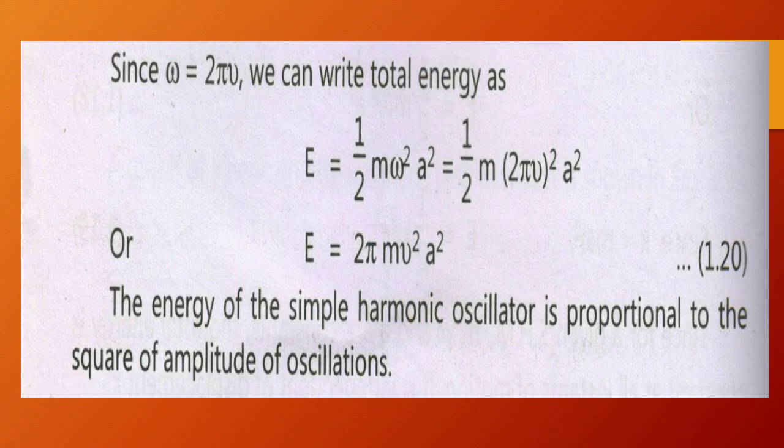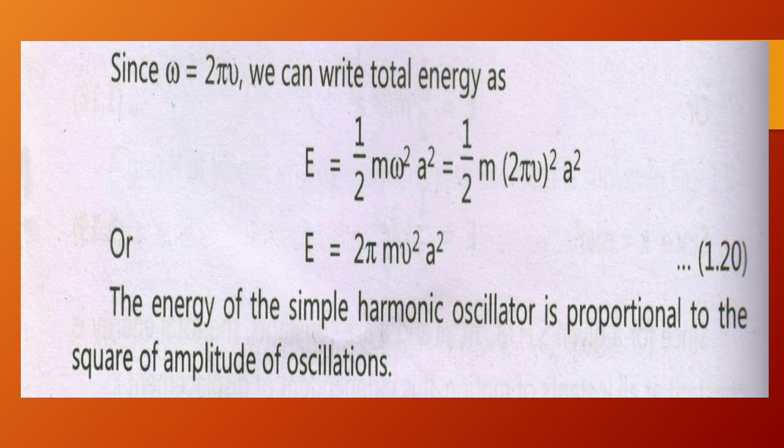Since ω = 2πν, we can write E = ½Mω²a² = ½M(2πν)²A², therefore E = 2π²Mν²A². The energy of a simple harmonic oscillator is proportional to the square of the amplitude of the oscillation.